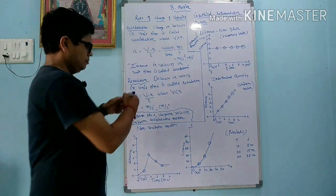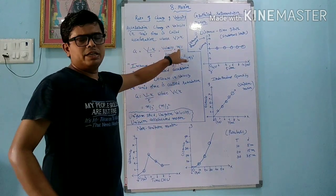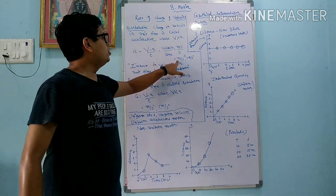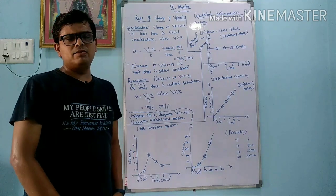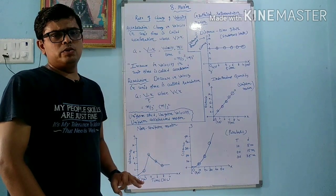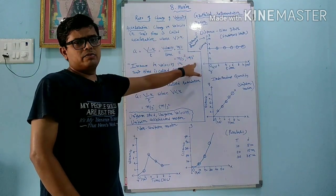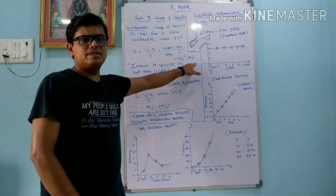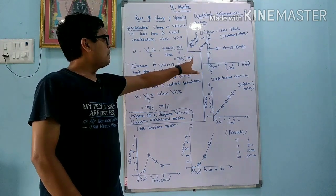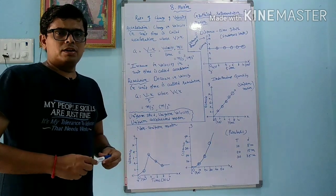Last time we learned the unit of velocity is meter per second, and time is second. By division we get the unit of acceleration as meter per second square. Meter per second square is the MKS unit. The CGS unit is centimeter per second square. In day-to-day life we use kilometer per hour.